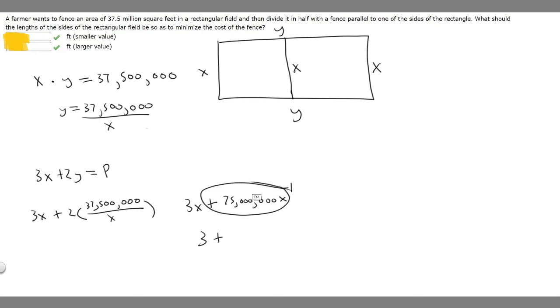Now we need to find the derivative of 75,000,000 times x to the minus 1. So what we do is just move our minus 1 down. So it's going to become 3 minus 75,000,000 times x to the, and then we subtract 1, so x to the minus 2. But I'm just going to write this as over x squared. It's the same thing.